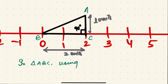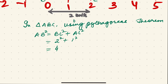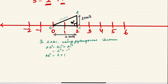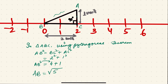In triangle ABC, using the Pythagorean theorem: AB squared equals BC squared plus AC squared. BC is 2 units, so 2 squared is 4. AC is 1 unit, so 1 squared is 1. Therefore AB squared equals 4 plus 1, which equals 5.